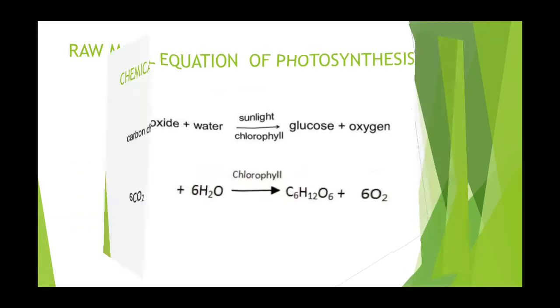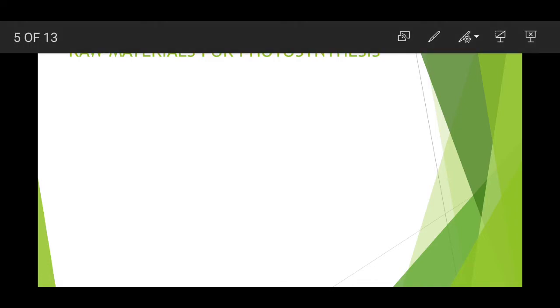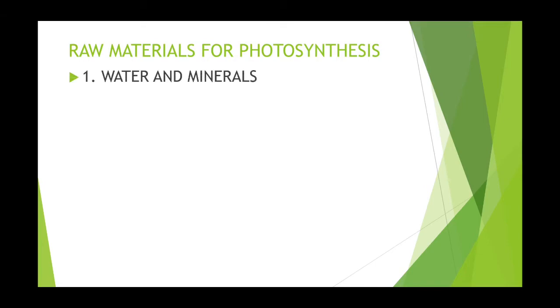Now let us know what are the raw materials required for photosynthesis. Since food is synthesized in the leaves, all the raw materials need to reach there. The first raw material is water and minerals. These are absorbed by the roots from the soil.